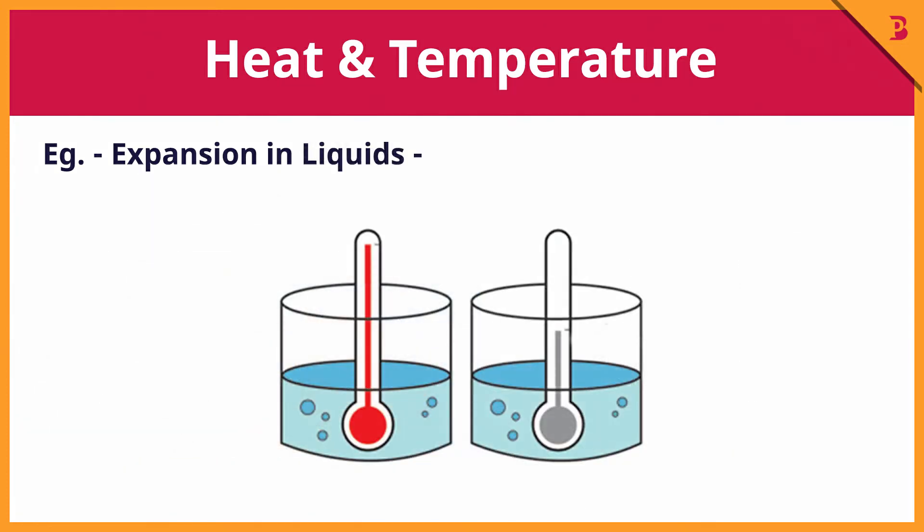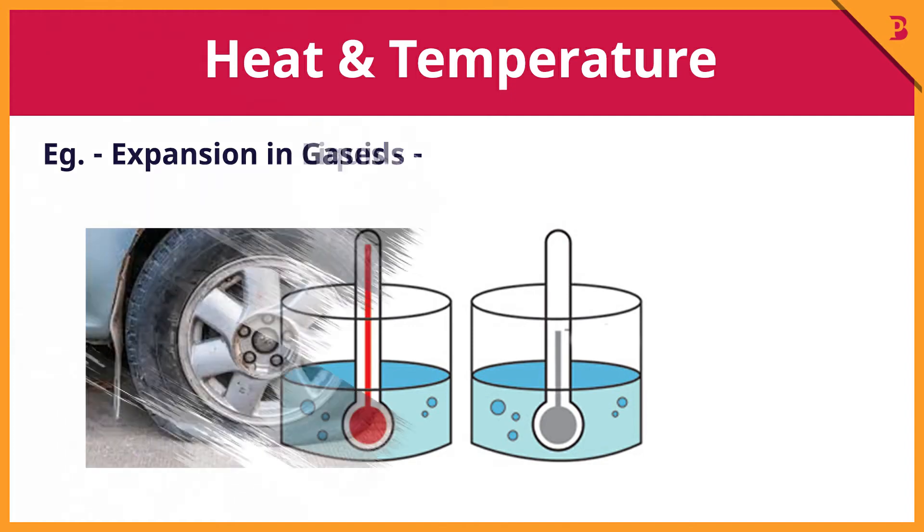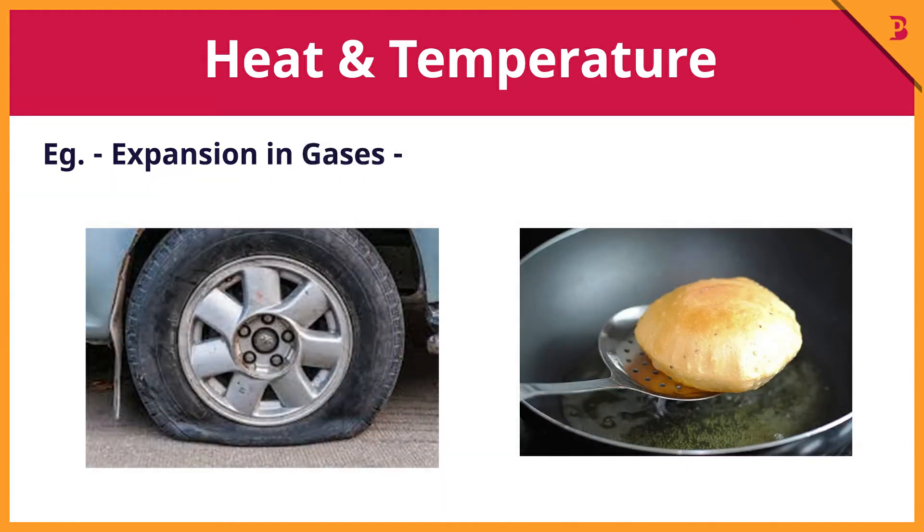Now, expansion in liquids. When the bulb of a thermometer is dipped into hot water, the mercury inside the bulb rises. On taking the thermometer out of the water, the mercury shrinks back to the bulb — because of thermal expansion.